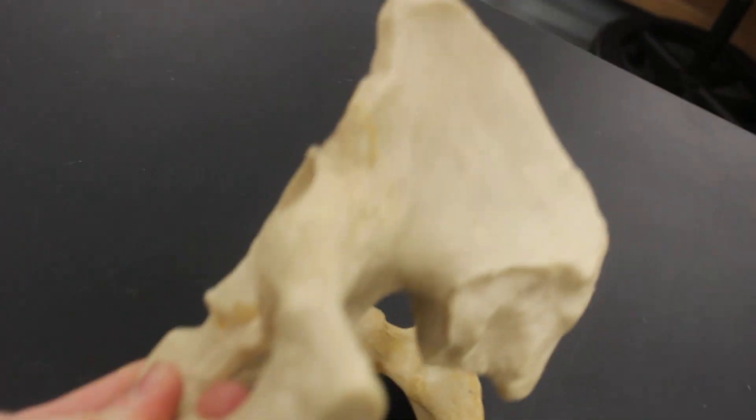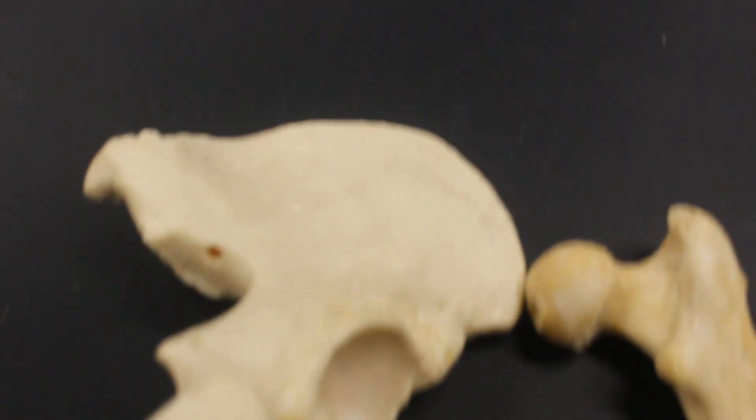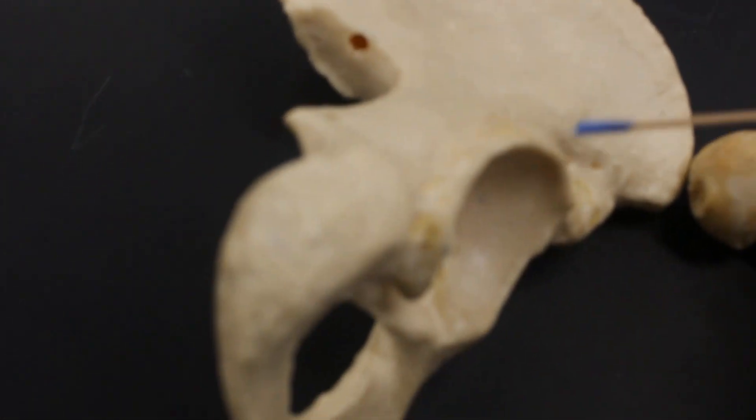So this here is the os coxae. As we know, the os coxae can be broken down into three regions. The superior is the ilium, so this is all ilium.